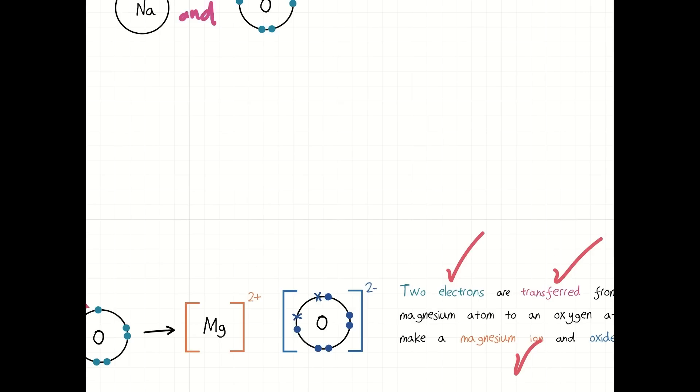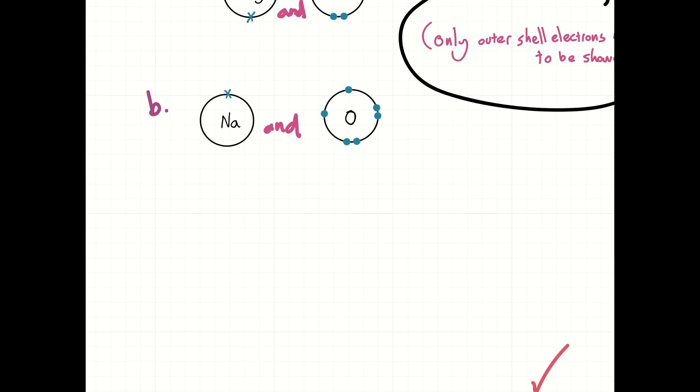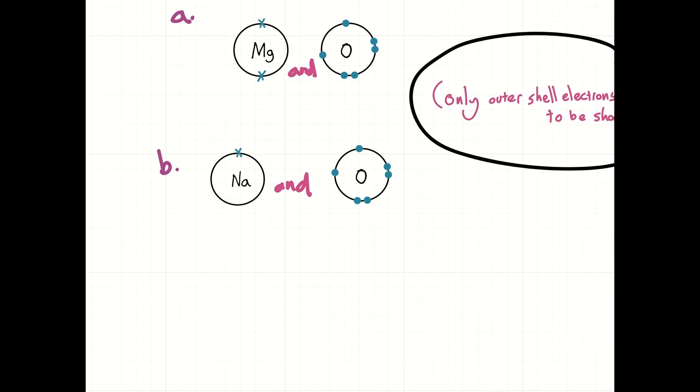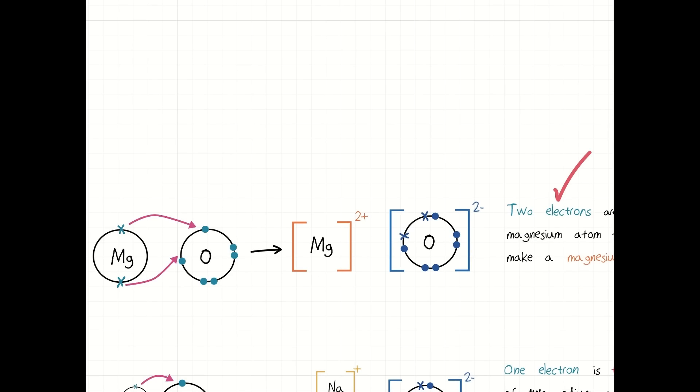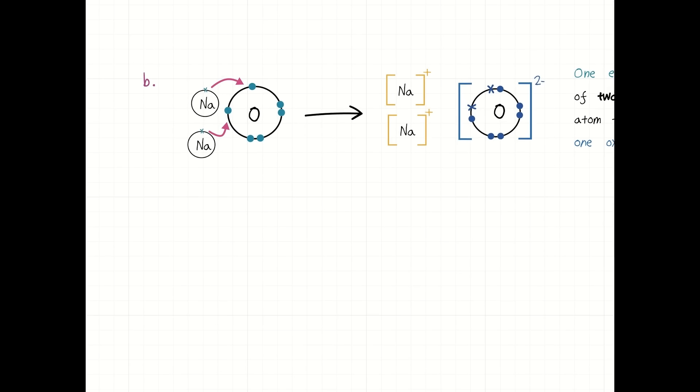Okay. So, what about B, sodium and oxygen? Now, sodium and oxygen, it's a bit trickier, because oxygen needs two electrons to get a full outer shell and sodium only can give one. So, similar to magnesium chloride, what happens here is you get one sodium atom giving one electron and another sodium atom giving another electron.